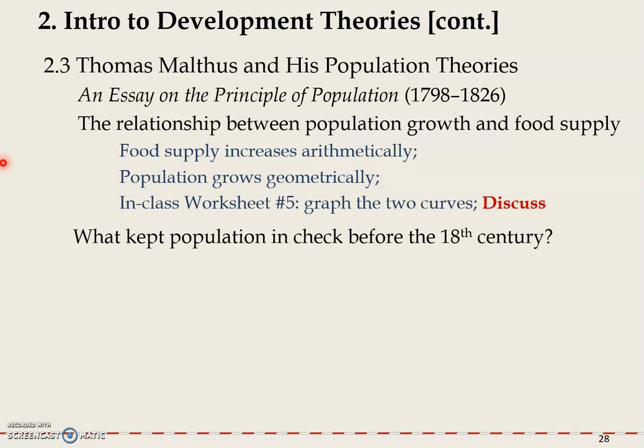When Malthus made an observation about the world's population before the 18th century, he found that it was actually pretty stable compared to what happened after the Industrial Revolution. So he wondered what factors actually kept the population in check before the 18th century.